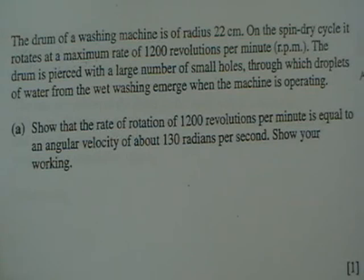The drum is pierced with a large number of small holes through which droplets of water from the wet washing emerge when the machine is operating. Show that the rate of rotation of 1200 revolutions per minute is equal to an angular velocity of about 130 radians per second. Show your working.